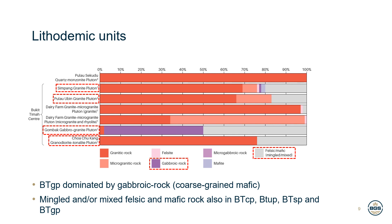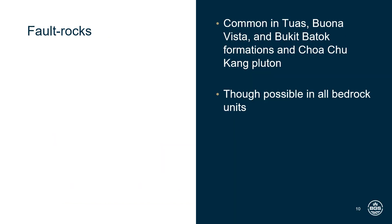In addition to more conventional rock types, there are also a number of more esoteric rock types and features encountered in the bedrock geology of Singapore, producing even greater variability. This includes fault rocks, which are particularly common in the Tuas and Buena Vista formations associated with the Murai and Pasir Laba thrust systems, the Bukit Batok formation associated with the Bukit Timah Fault Zone, and the Choa Chu Kang Pluton, possibly associated with the Proto-Bukit Timah Fault Zone. Fault rocks have also been identified in several other units and should therefore be considered possible in all bedrock units.